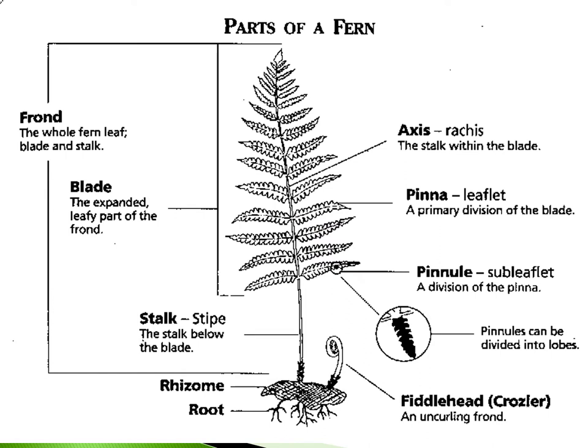Since we'll be spending some time talking about ferns, I want to cover a little bit of fern terminology. I find that this helps people understand the plants a little bit better and also provides useful context during the lecture. The frond is the whole leaf from the very tip down to the base where it arises from the rhizome. The blade is the expanded portion of the leaf.